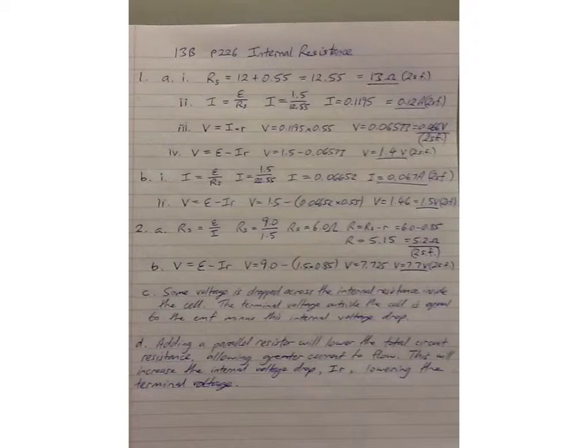Number 4. Calculate the voltage, capital V, across the terminals of the cell, the terminal voltage. So the equation you use is this one. You simply subtract away the internal loss, I times R, from the EMF of the cell to find the terminal voltage. So that should come out to be 1.4 volts to two significant figures.